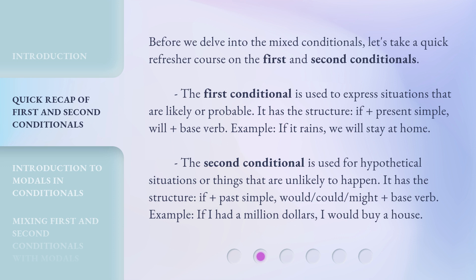The second conditional is used for hypothetical situations or things that are unlikely to happen. It has the structure: if plus past simple, would, could, might plus base verb. Example: If I had a million dollars, I would buy a house.